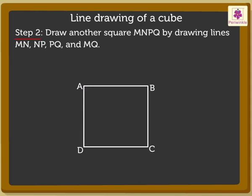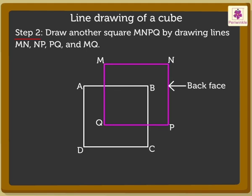Step 2: Now draw another square MNPQ of the same size behind square ABCD by drawing lines MN, NP, PQ, and MQ. This is the back face of the cube.